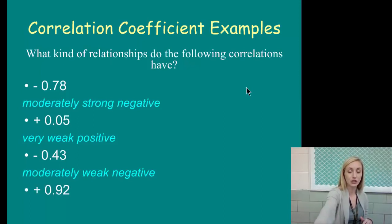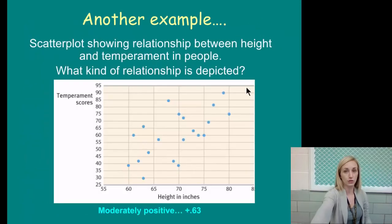Positive 0.92. Positive, yeah, that doesn't mean anything. So what is the strength indicated by the number 0.9? That is a very strong correlation.